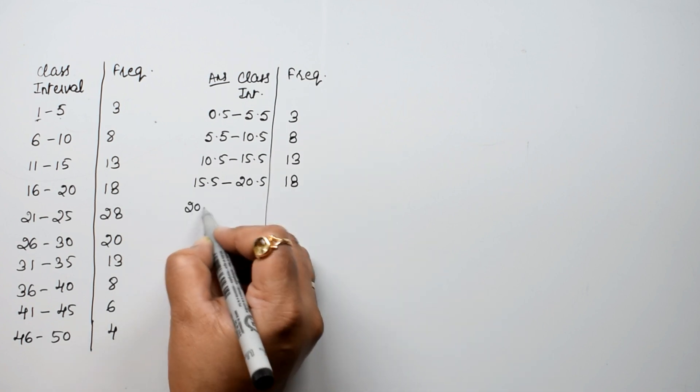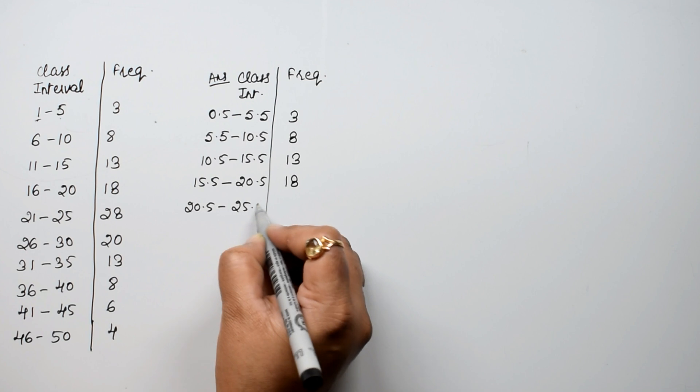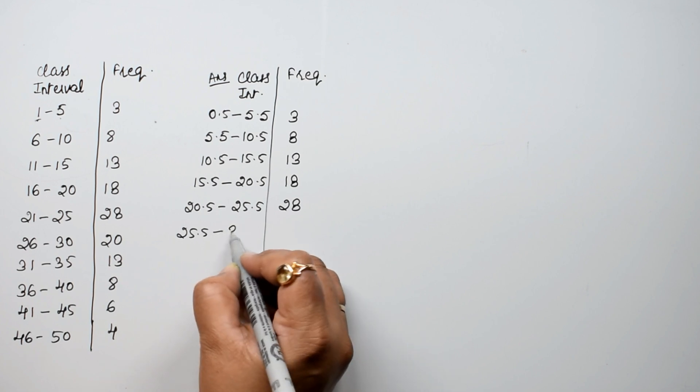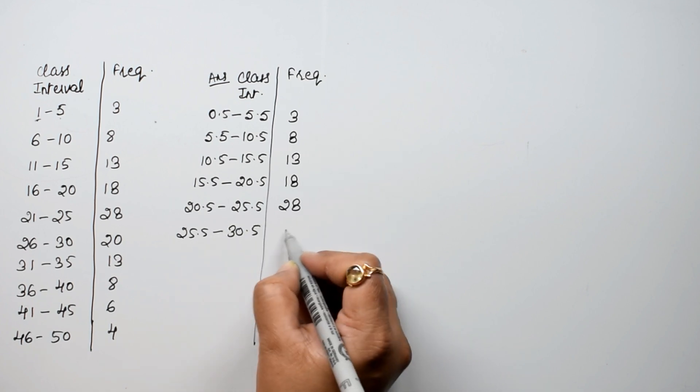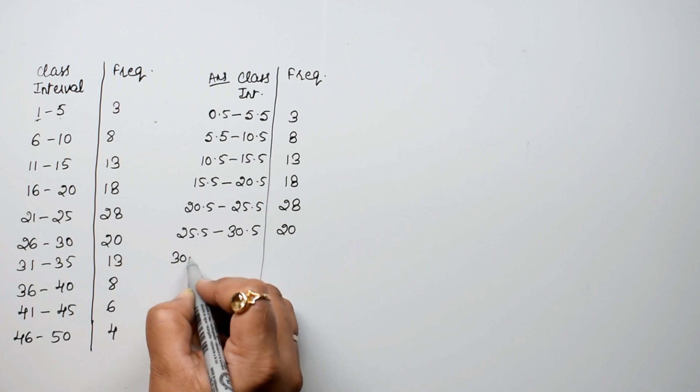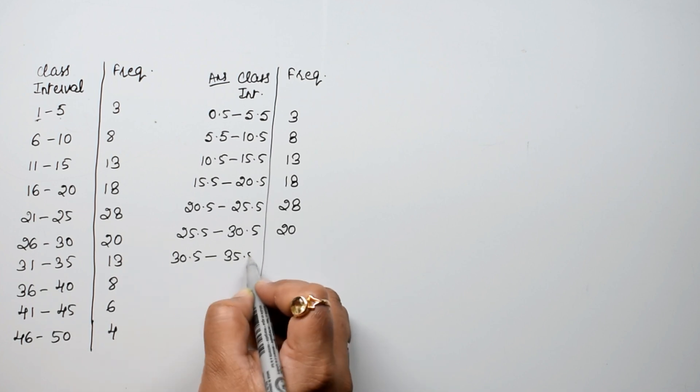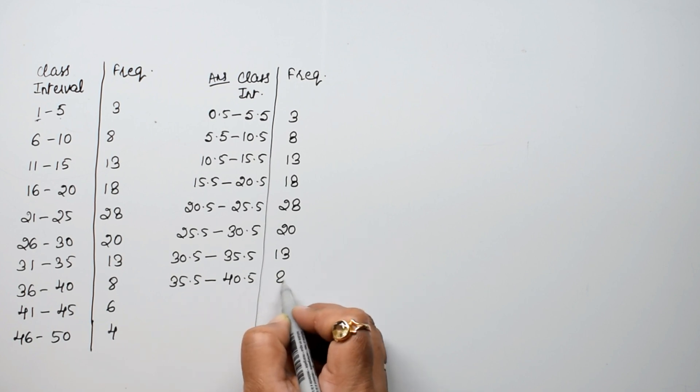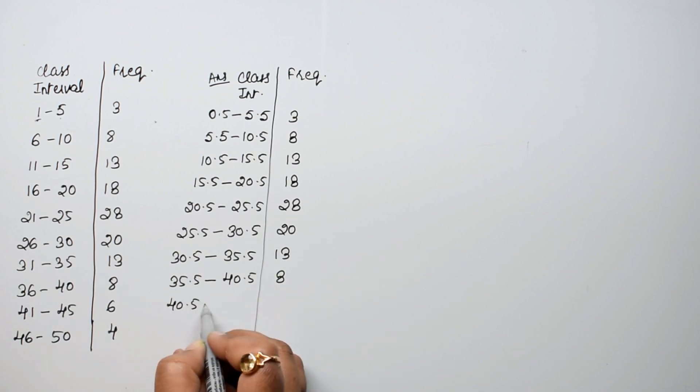Continuing: 20.5 to 25.5 the frequency is 28, 25.5 to 30.5 is 20, 30.5 to 35.5 is 13, 35.5 to 40.5 is 8, 40.5 to 45.5 is 6, and 45.5 to 50.5 is 4.